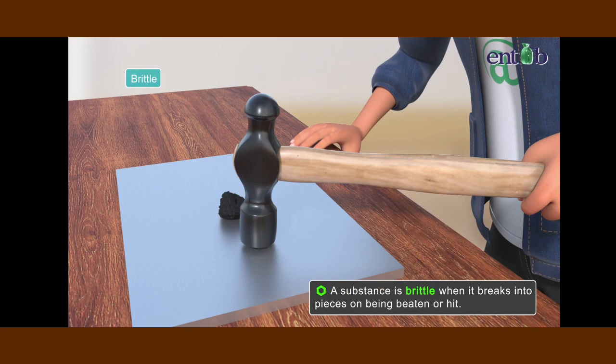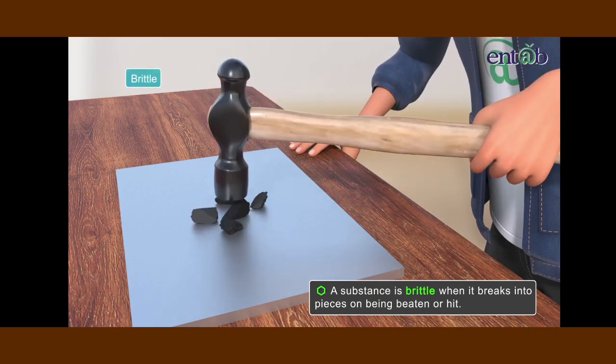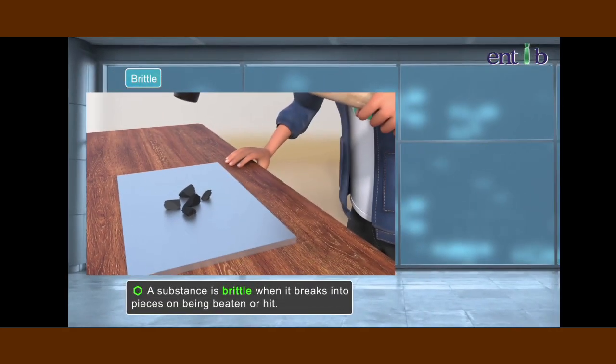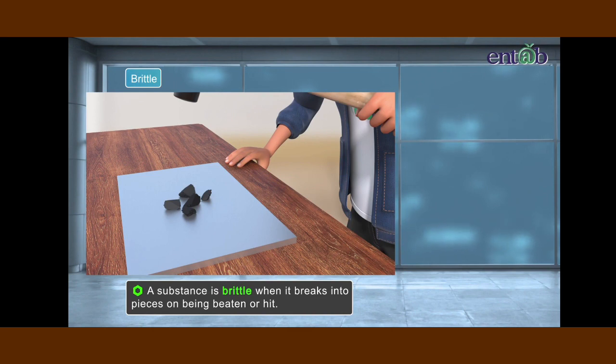When do we call any substance brittle? A substance is called brittle when it breaks into pieces on being beaten or hit. Most of the solid non-metals are brittle in nature.